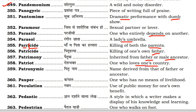What is patriot? A patriot is one who loves one's country. Next is patronymic. Patronymic is a name derived from that of the father or an ancestor.